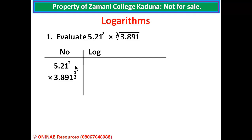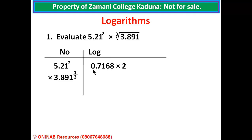We take the first number and find the logarithm. The logarithm of any number has two parts: the integer part, which is the power of 10 when the number is expressed in standard form. For 5.21 in standard form, the power of 10 is 0, so the integer part is 0. Going to the logarithm tables, look at 52 under 1, which gives 0.7168. Because of the power of 2, we multiply the logarithm by 2. Multiplying 0.7168 by 2 gives 1.4336.